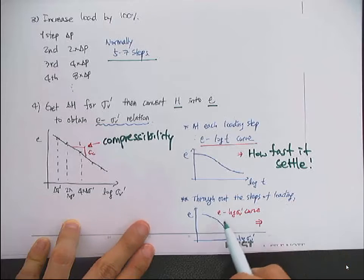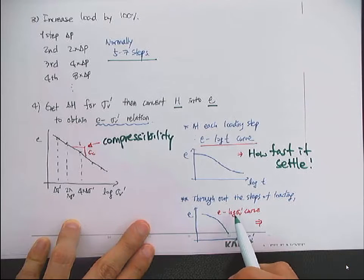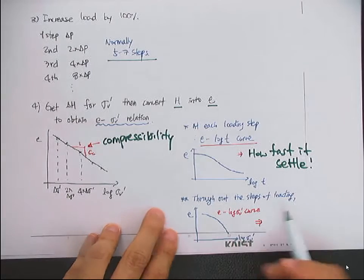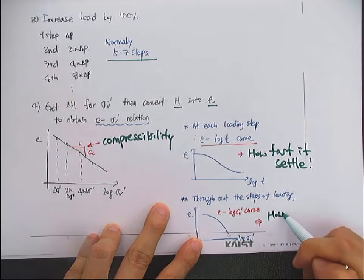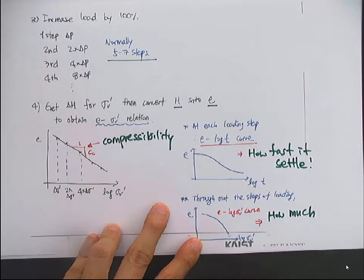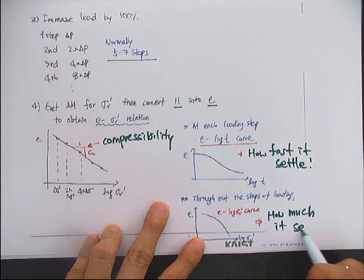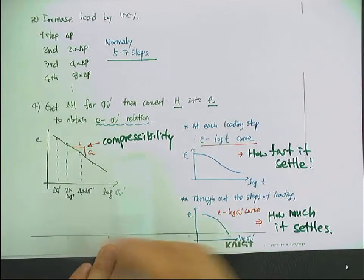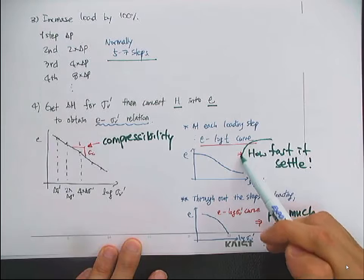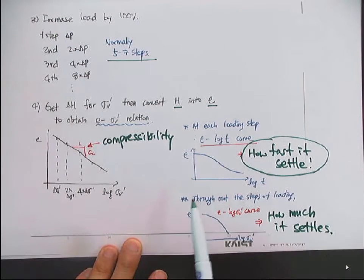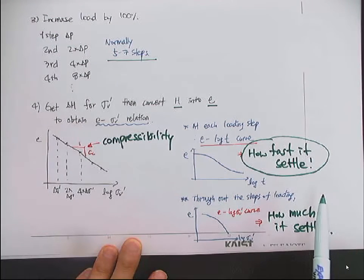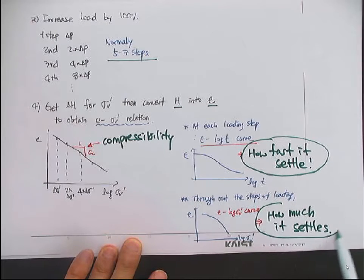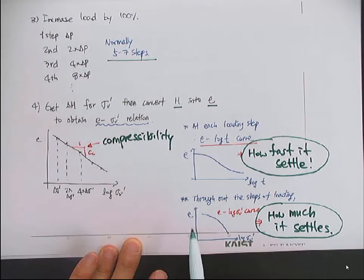Throughout the steps of loading, you can get the e versus sigma V curve — the effective stress. This will tell you how much settlement will occur as a result of the load. So from this consolidation test, we can obtain information about the time rate of settlement, and also information about the ultimate settlement — how much settlement will occur for a given loading.